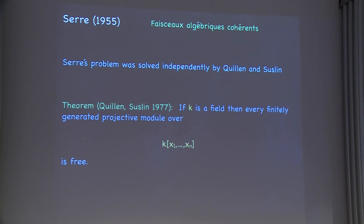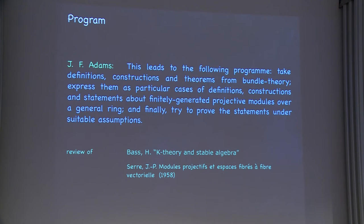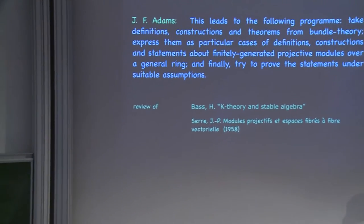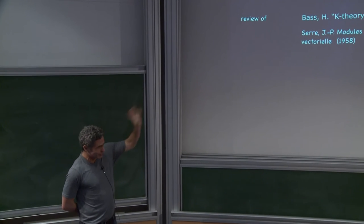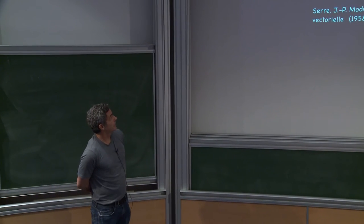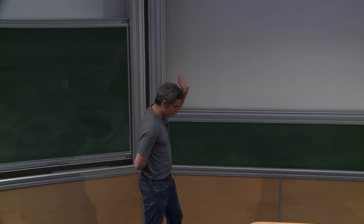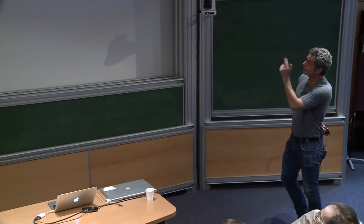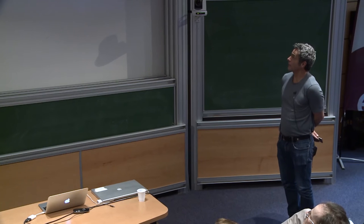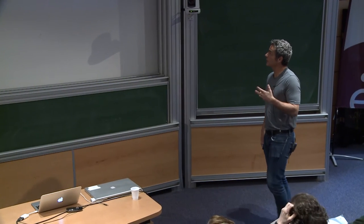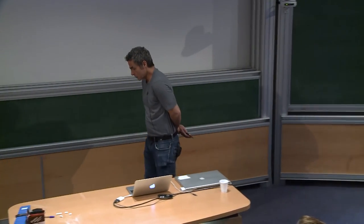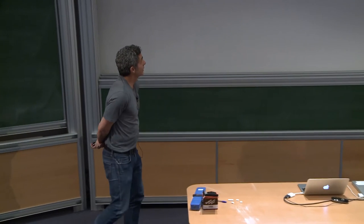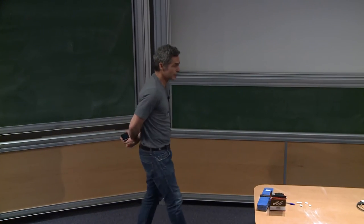This was solved independently by Quillen and Suslin in this case. There were a whole bunch of problems like that, many of them promoted by Hyman Bass, Serre, and others. Adams identified in his math review of these papers an ongoing program — not that this was Adams' program, but he articulated it, saying it leads to the following program: take definitions, constructions, and theorems from bundle theory and express them in terms of finitely generated modules over a ring, and then use bundle theory as a conjecture-generating device and try to prove these things about rings.